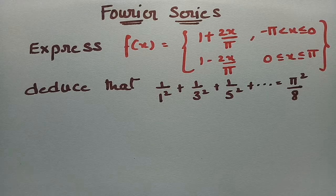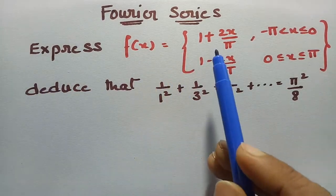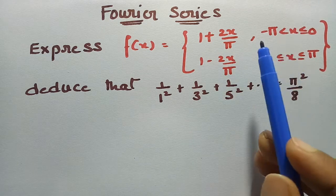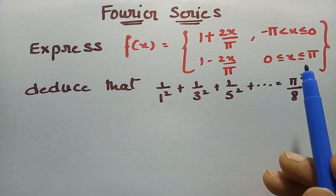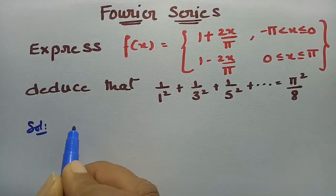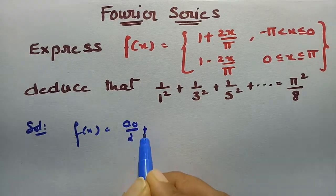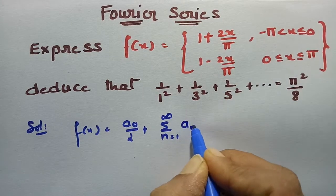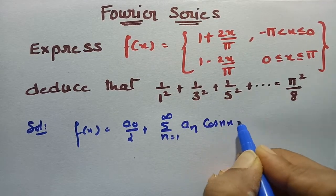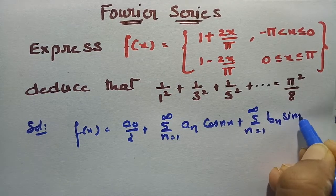You will be far ahead from where you are right now if you follow these amazing tips in solving the problems on Fourier series. Express f(x) = 1 + 2x/π where x lies between −π to 0, and 1 − 2x/π when x lies between 0 to π. The Fourier series is f(x) = a₀/2 + Σ aₙ cos(nx) + Σ bₙ sin(nx).